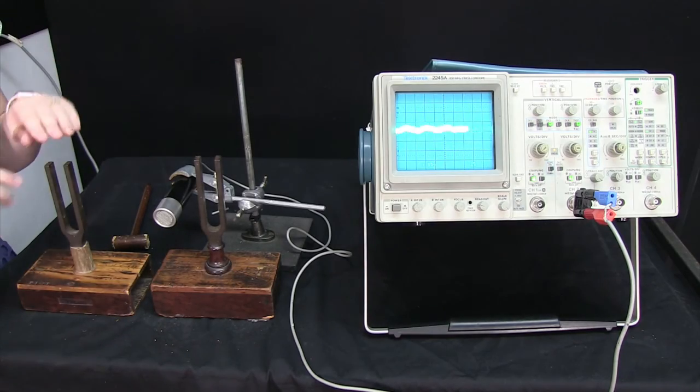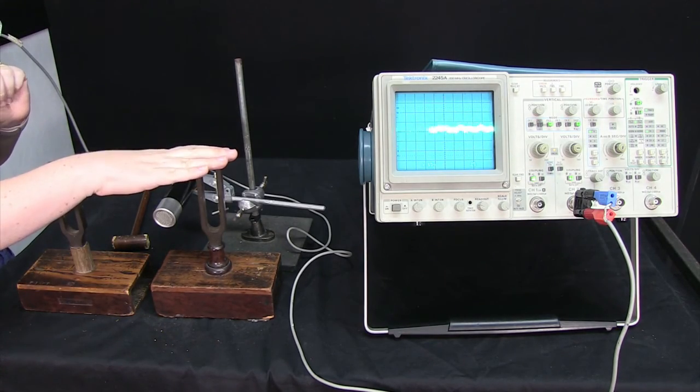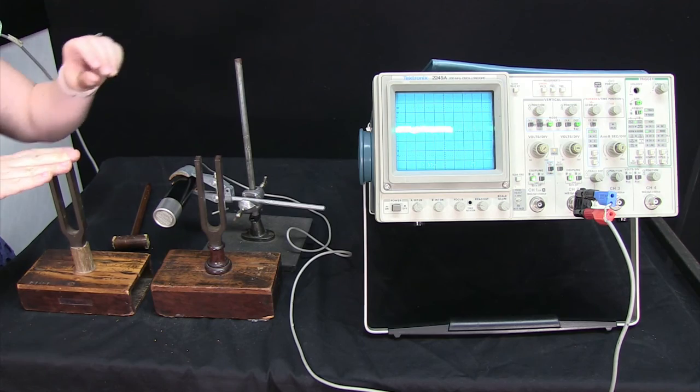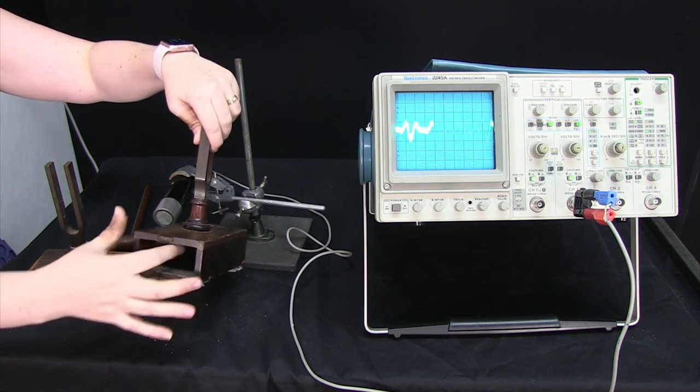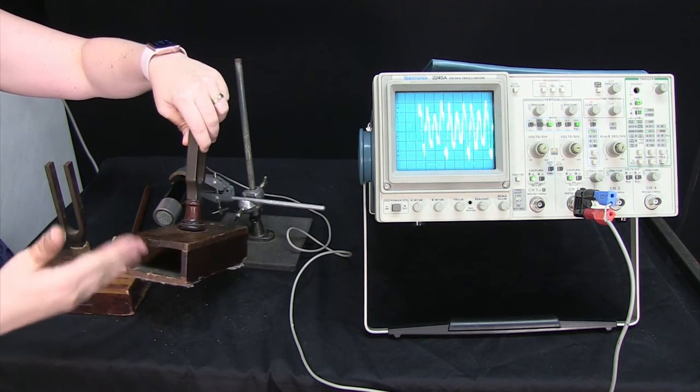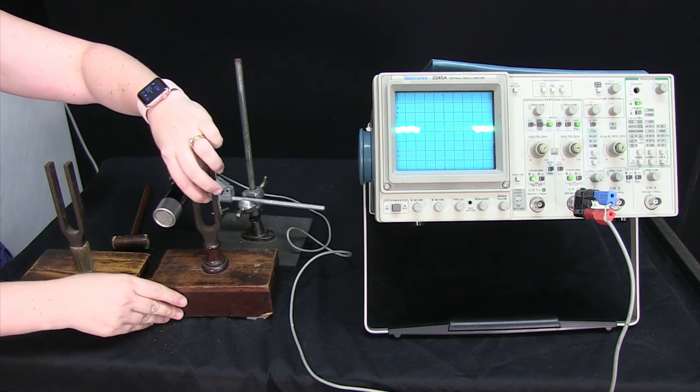What I've got here is two tuning forks: 703 hertz and 704 hertz. They're both screwed onto hollow boxes so that resonance will make the signal stronger.